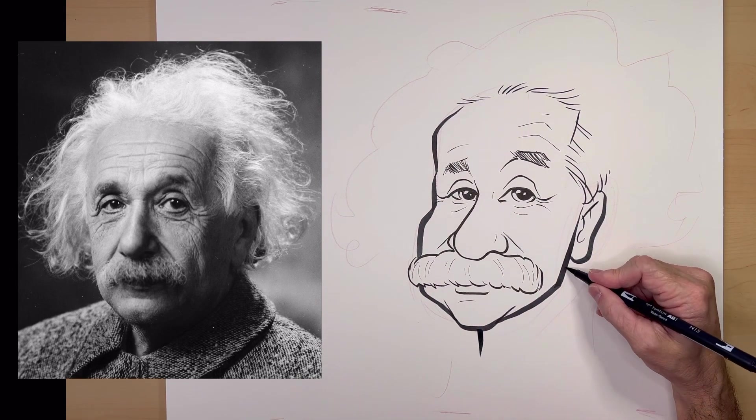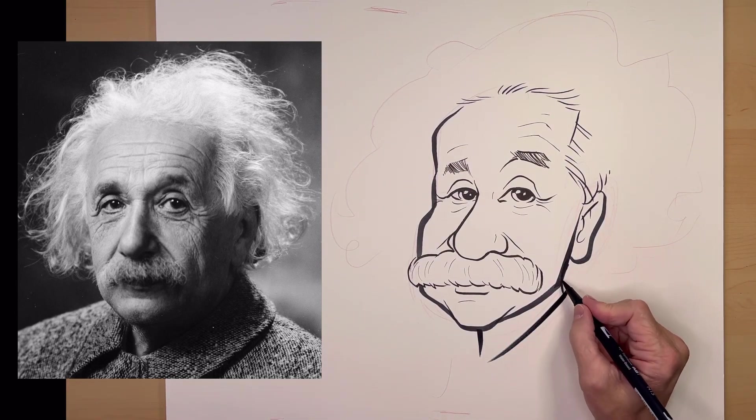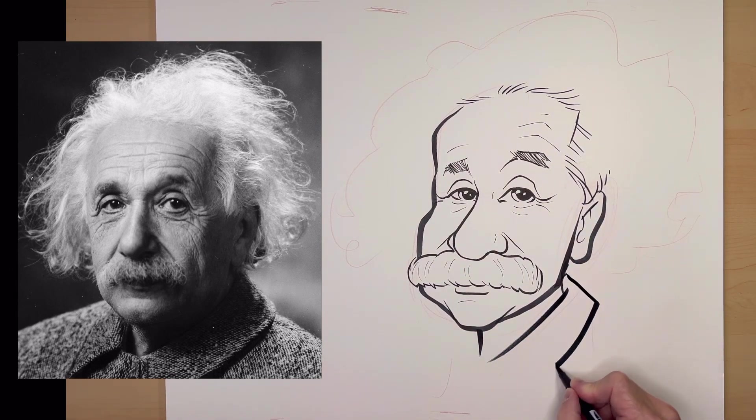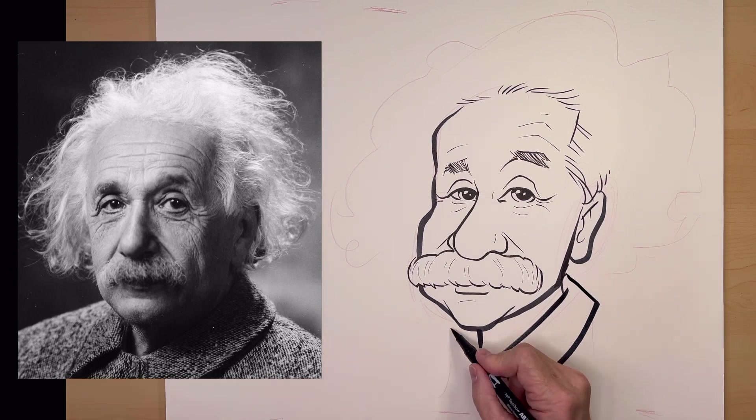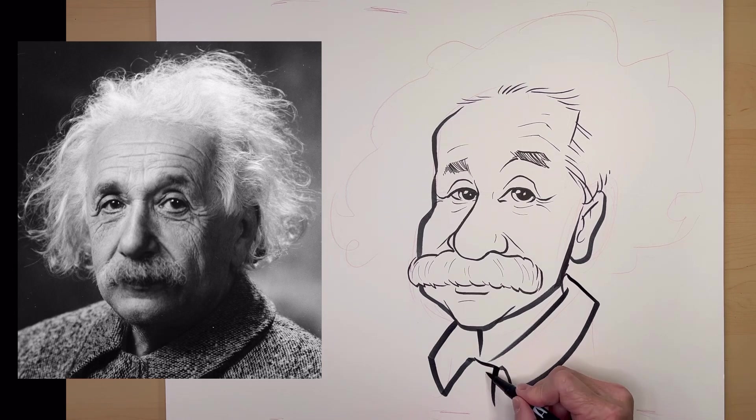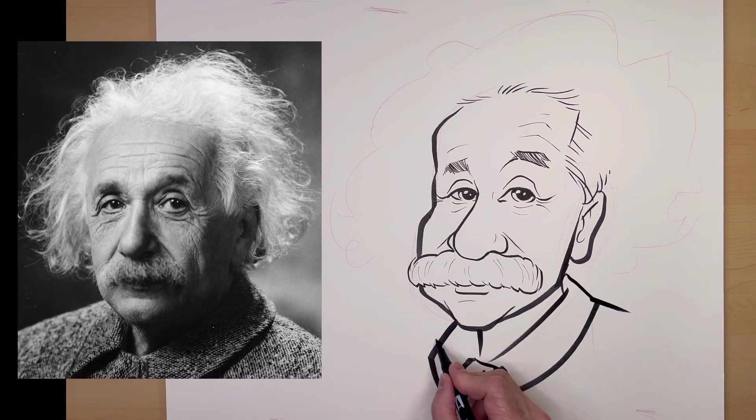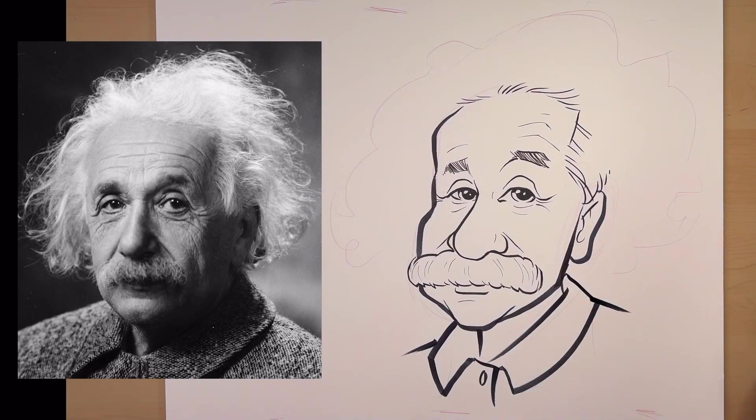I've got a little bit of a neck here. He's got this big coat. It looks like it's made out of thick wool or something. So I'm just going to draw the thick collar of this coat.